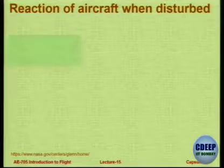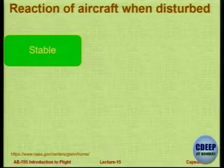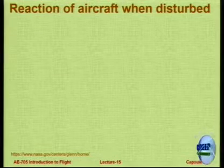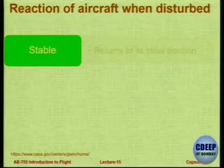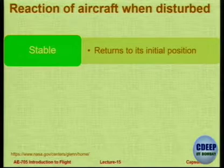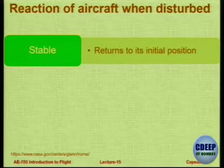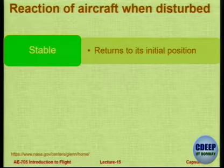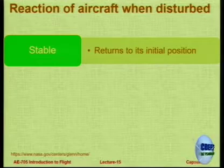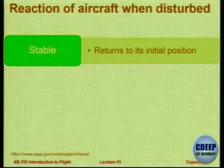Let us see what is the reaction of an aircraft when it is disturbed. The aircraft is in trimmed condition — forces are in balance, moments are in balance — and now some disturbance acts on it. Its reaction determines its stability. The aircraft is considered to be stable when, after disturbing it, it comes back to its initial position without any action of the pilot. If the pilot has to bring it back, that is called control. Stability means it returns on its own.